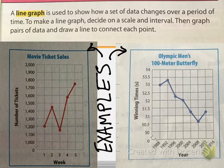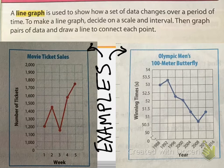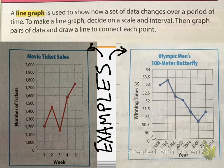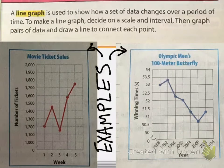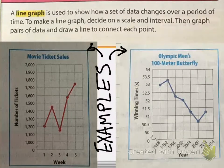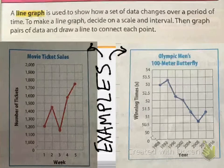A line graph is used to show how a set of data changes over a period of time. To make a line graph you have to decide on the scale and the interval — exact same as making a normal graph, be it a bar graph or an xy graph. Then you graph the pairs of data, the x comma y, and simply draw a line to connect each point.